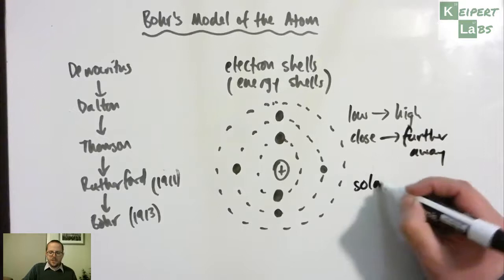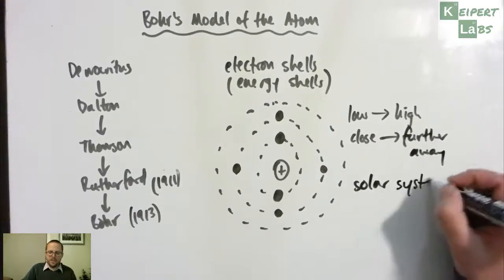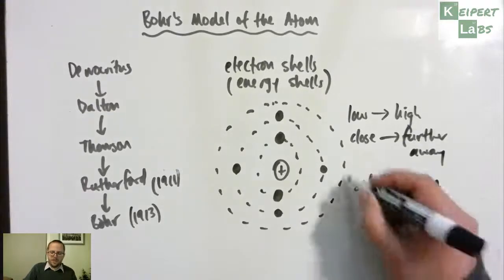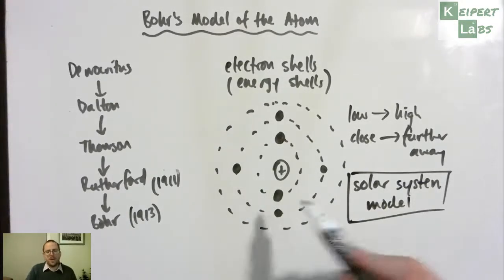So sometimes, as you can imagine, we would refer to this as the solar system model. Because it's not hard to see the comparison that the sun at the centre and then planets orbiting around it at a particular distance away from the sun: Mercury, then Venus, Earth, Mars, and so on. Those orbits getting further away.